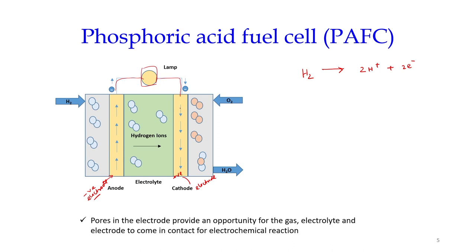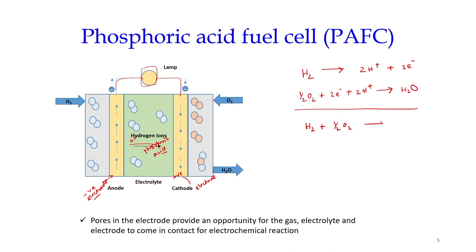When the electrons reach the positive electrode (cathode), half of oxygen reacts with those electrons and with the hydrogen ions that have traveled through the electrolyte — which here is phosphoric acid — producing H₂O. The overall reaction is H₂ + ½O₂ → H₂O. But normally at rated current, the voltage lies between 0.7 and 0.8 volts.